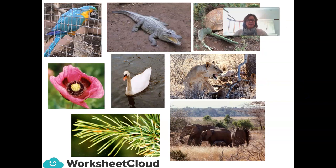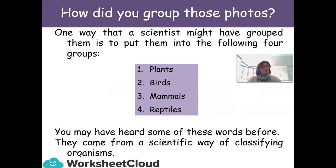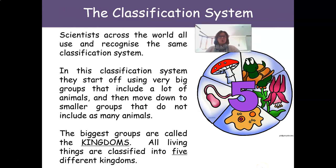Take a look at these pictures. How would you group them? You've got birds, plants, animals, and grasses. How would you classify these pictures? One way that a scientist might have grouped them is to put them into the following four groups: plants, birds, mammals, and reptiles. These come from a scientific way of classifying organisms. Scientists across the world all use and recognize the same classification system.